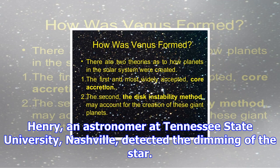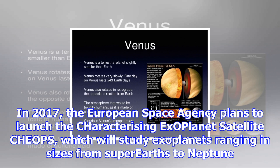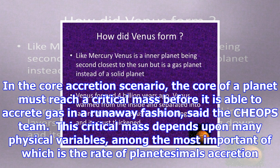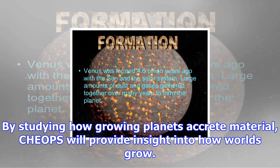"This is a confirmation of the core accretion theory for planet formation and evidence that planets of this kind should exist in abundance," said Greg Henry in a press release. Henry, an astronomer at Tennessee State University, Nashville, detected the dimming of the star. In 2017, the European Space Agency planned to launch the Characterizing Exoplanet Satellite CHEOPS, which will study exoplanets ranging in sizes from Super-Earths to Neptune. Studying these distant worlds may help determine how planets in the solar system formed.